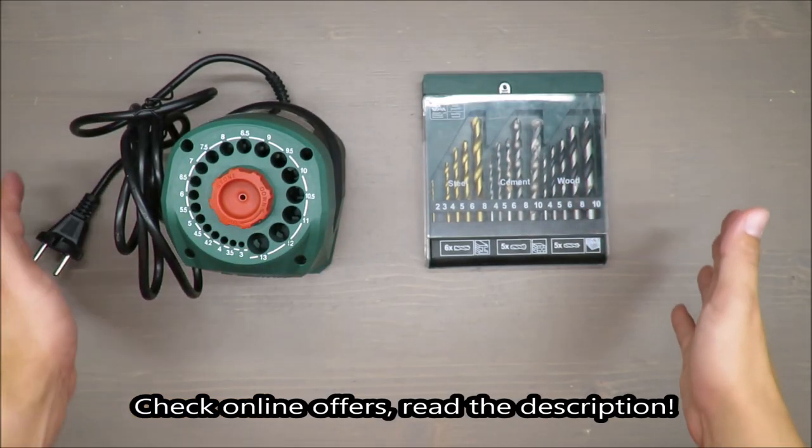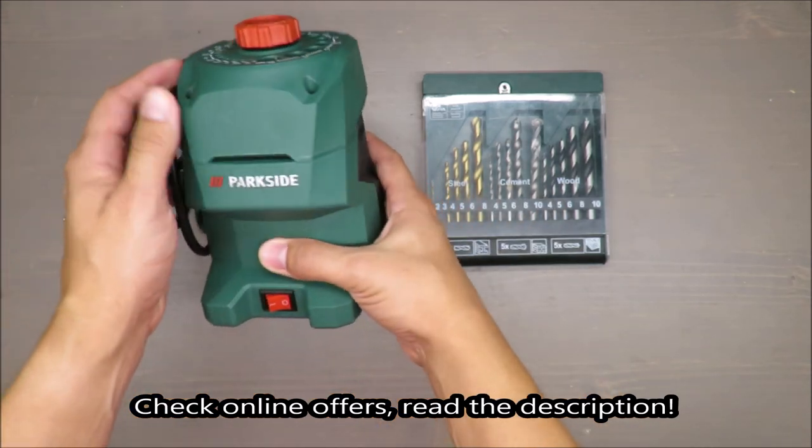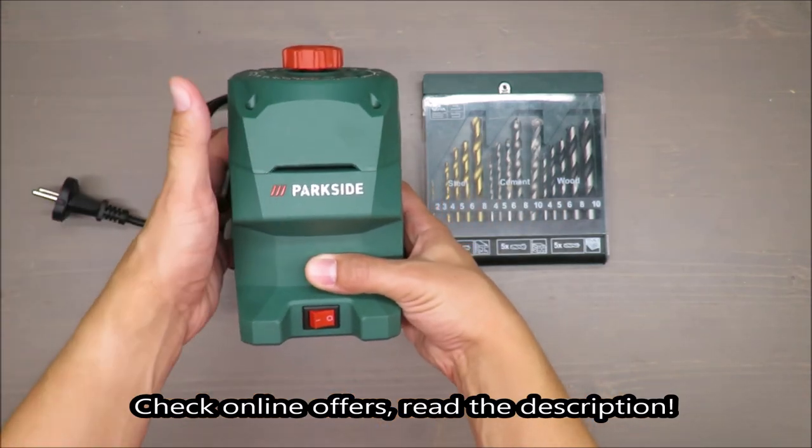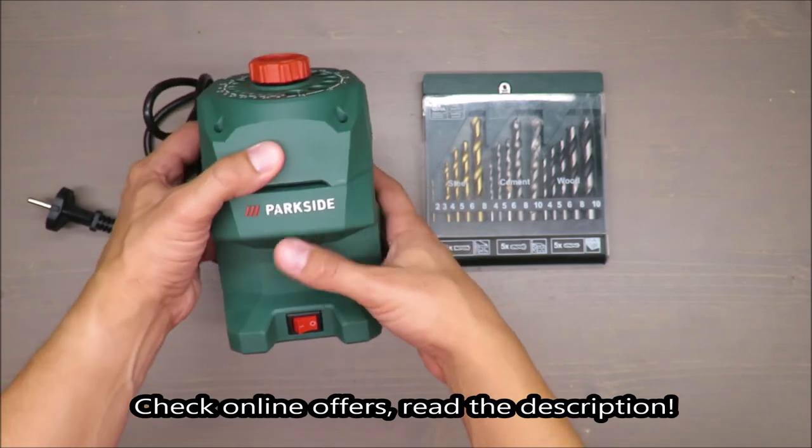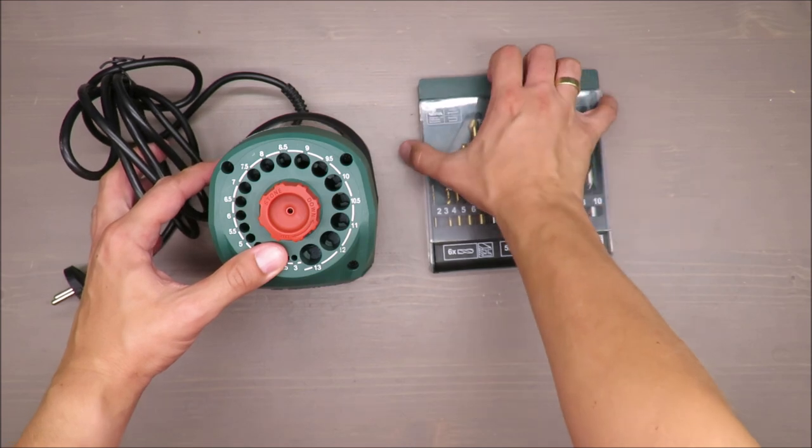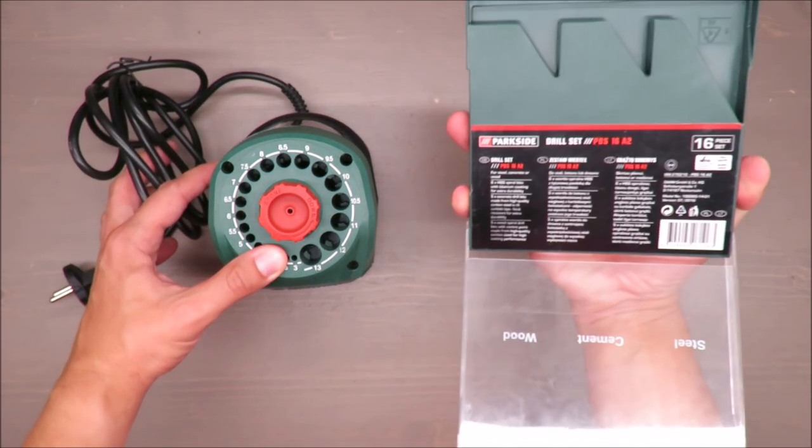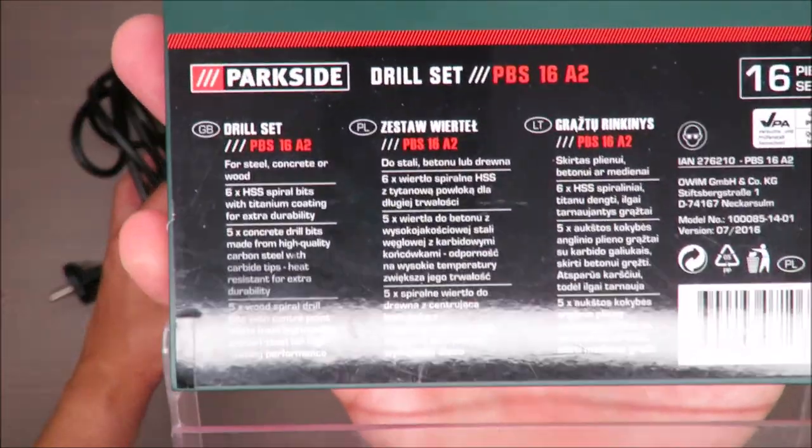Hello everybody, this is Out of the Box Unboxing. In today's episode, I'm going to review this drill bit sharpener from Parkside, available at Lidl. For this purpose, I have prepared my drill set from Parkside, so it will be tested—Parkside appliance tested on Parkside drills.